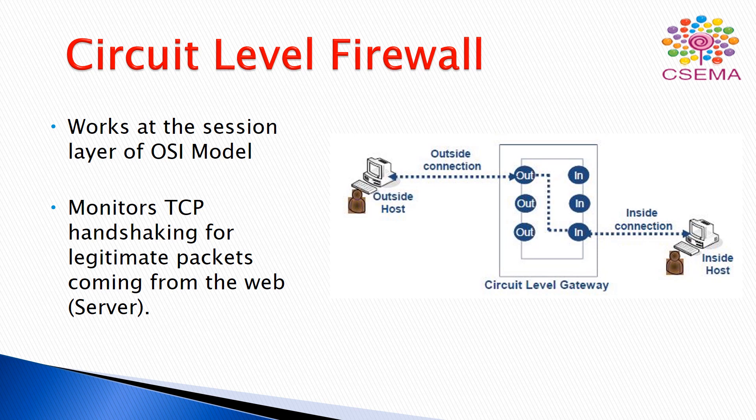The third is the circuit level firewall, which works at the session layer of the OSI model. It is used to monitor the TCP handshake for legitimate packets coming from the web. The TCP handshake works as follows: when we connect to a server, we send a request to connect, then the server sends an acknowledgement, and after receiving the acknowledgement the client is able to send data. The circuit level firewall monitors this TCP handshaking process to verify legitimate and genuine packets.